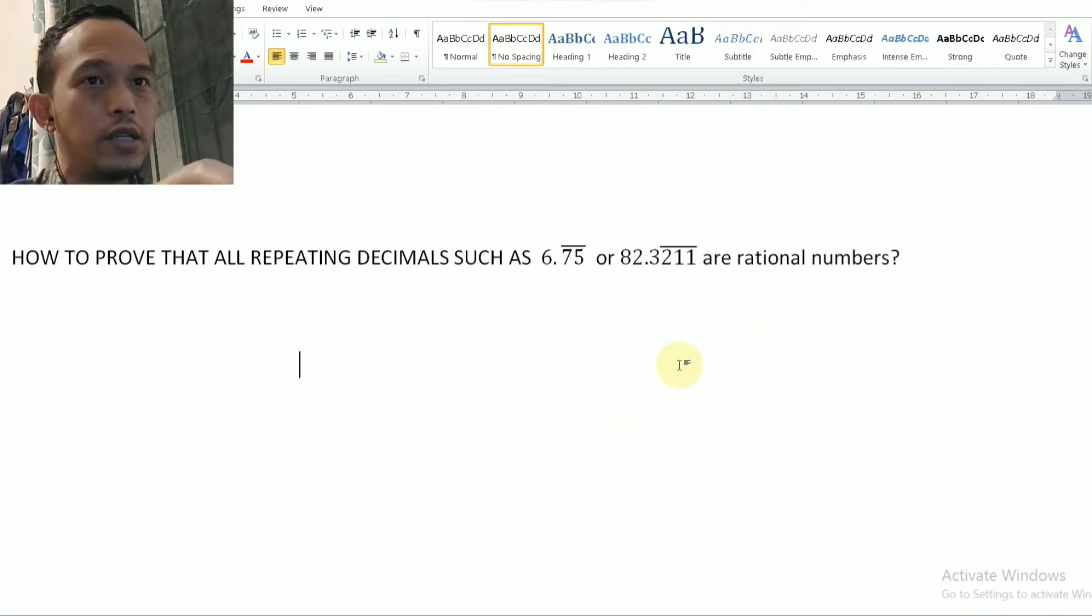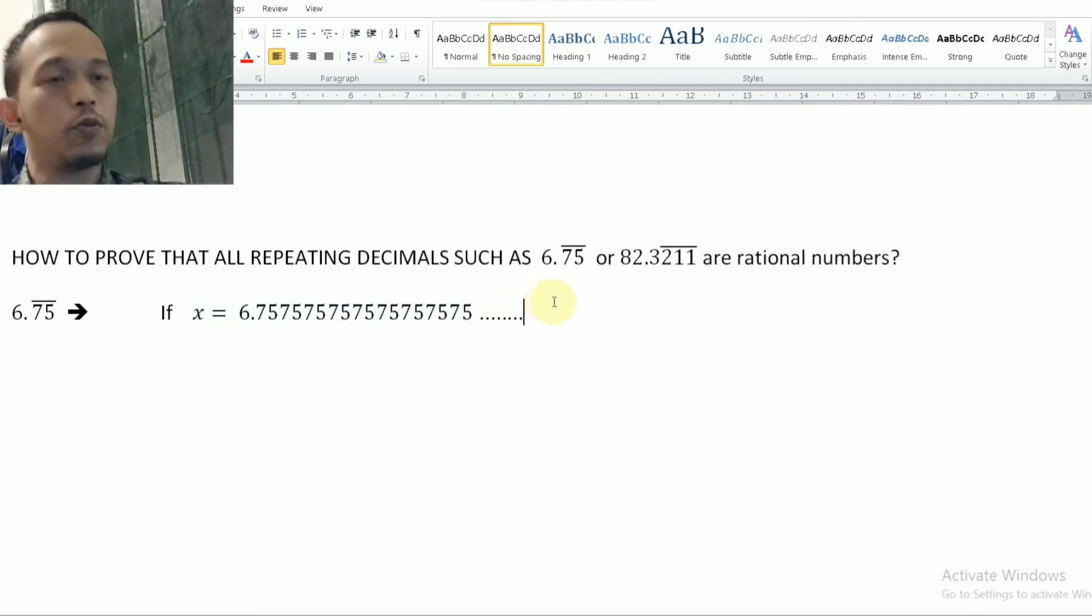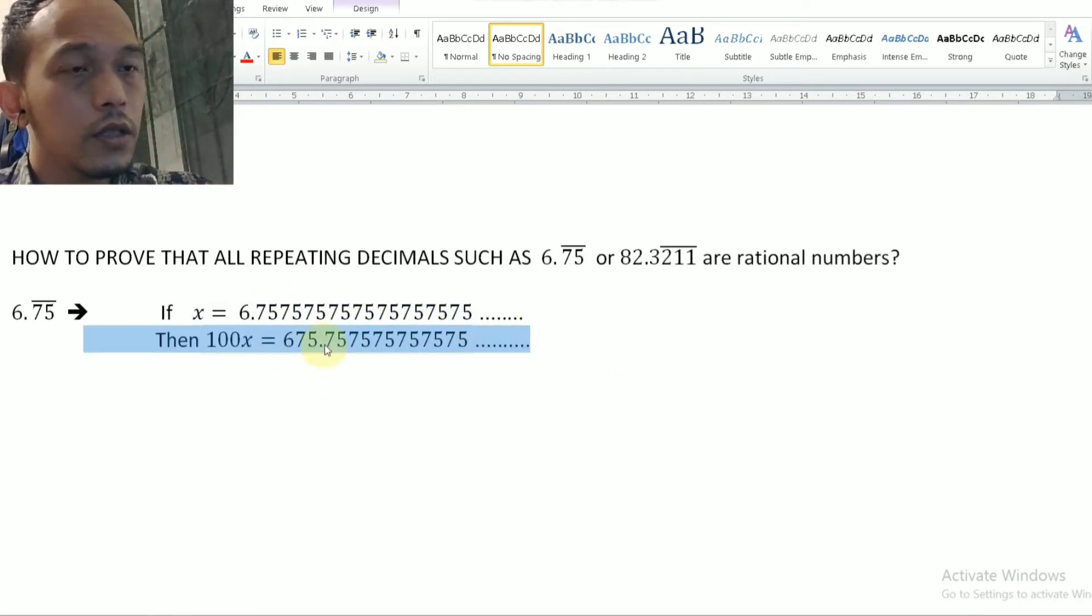The first example will be 6.757575 and so on. So I will make an assumption here. To prove this, I will make an assumption. If x equals to this value, the one that we want to prove. Therefore, if I multiply x by 100, I will have a decimal with the digits after decimals exactly the same as the original one.